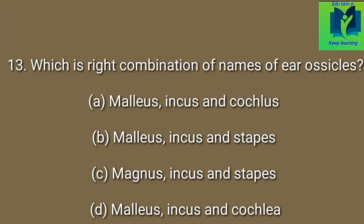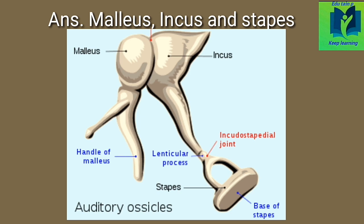Which is the right combination of names of ear ossicles? Option A: malleus, incus and cochleus. Option B: malleus, incus and stapes. Option C: magnus, incus and stapes. Option D: malleus, incus and cochlea. Answer: malleus, incus and stapes.